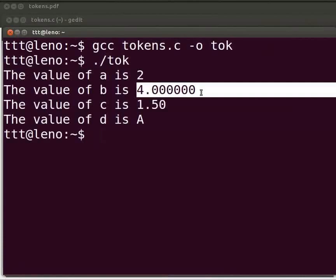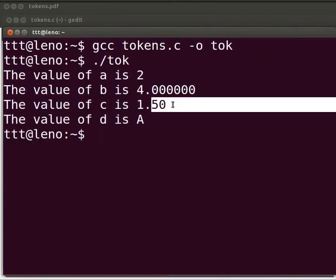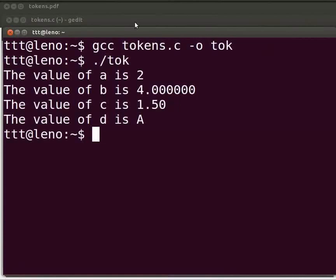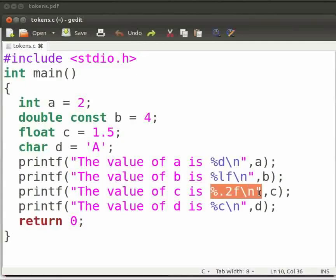We can see that here we have six values after the decimal point, and here we have two values. Now let us find out how this happened. Come back to our program. This is because we have %.2f here.